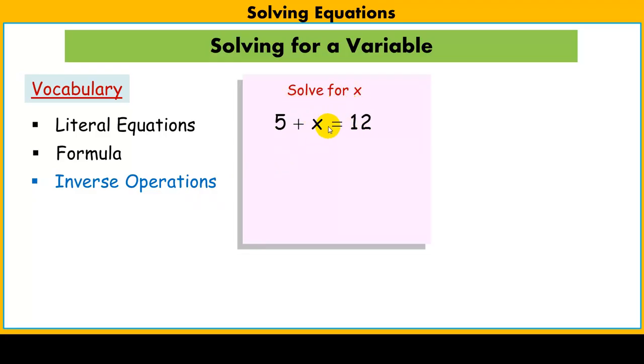Now when we say solve for x, we want to get x alone. So we want to do whatever I have to do to get x alone on one side of the equation. And I see that 5 is being added to x, so we will undo something. But the point is we get x alone on one side and then usually we would just get some number over here that says x is that number.